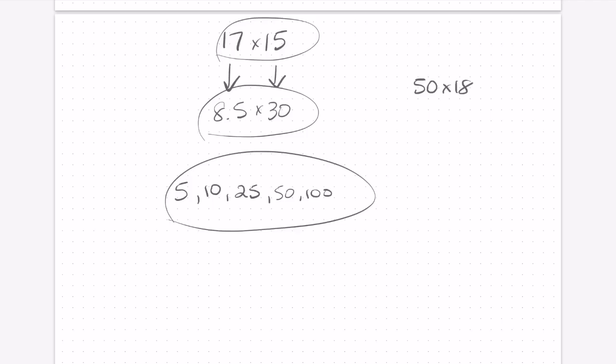50 times 18. This would lend itself well to halving and doubling because we know that we can easily double 50 to make 100 and then half 18 to make 9.